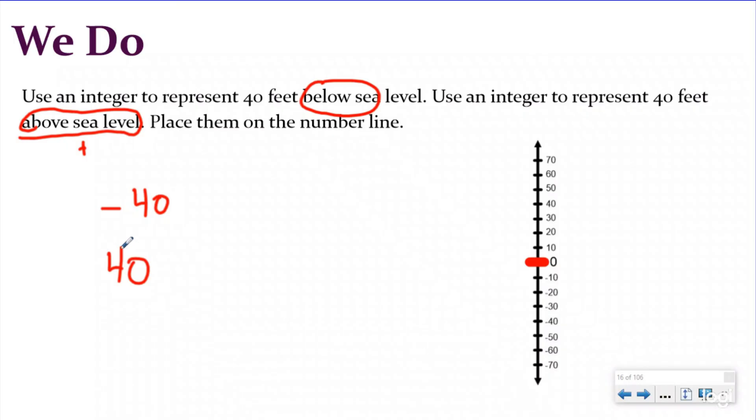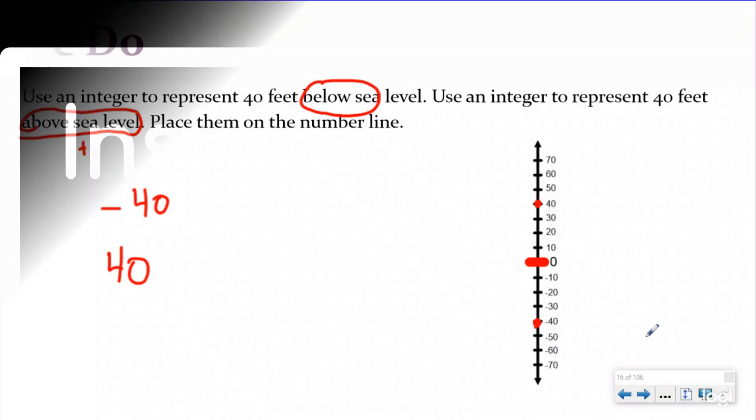Now we need to place them on the number line. So I'm going to start at zero. My negative 40 tells me I'm going to be moving away from zero, 10, 20, 30, 40. So right here is going to be my negative 40. And then I want to put positive 40 on there, which means I'm going to start at zero and I'm going to move up the number line, 10, 20, 30, 40. And now I've put both of those integers on my number line.